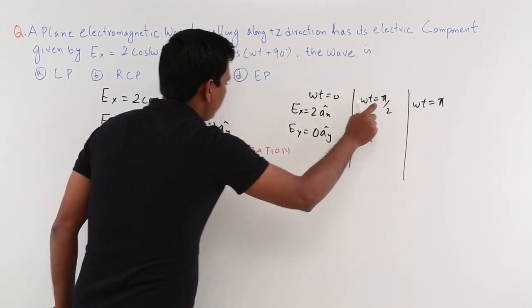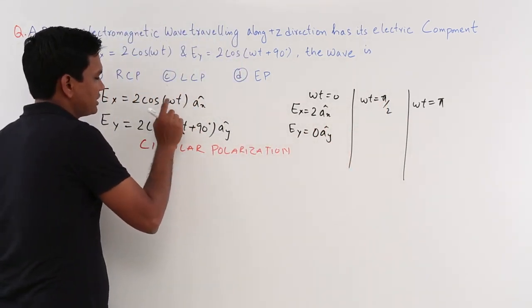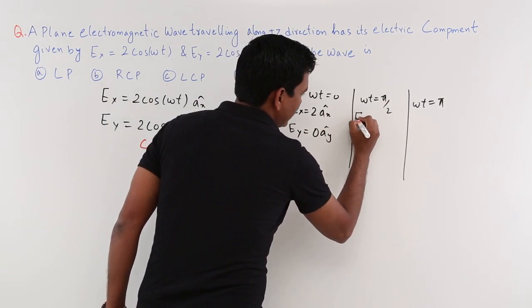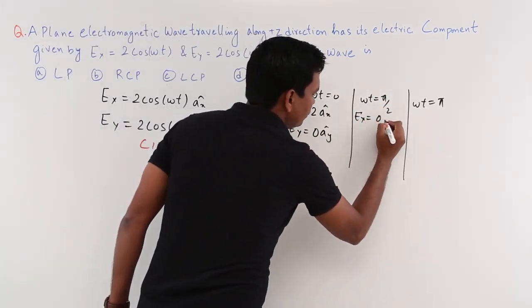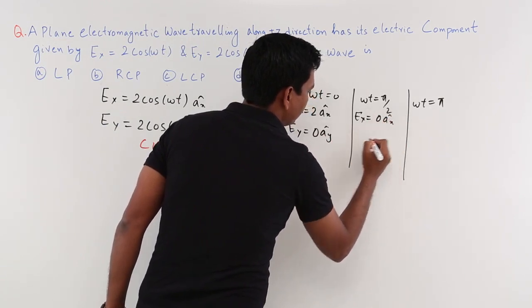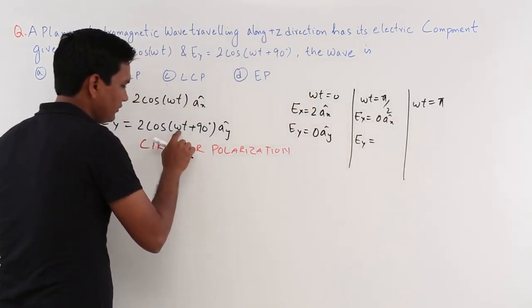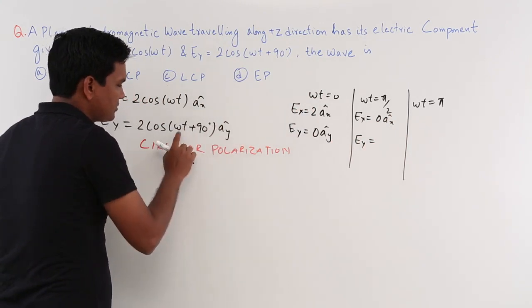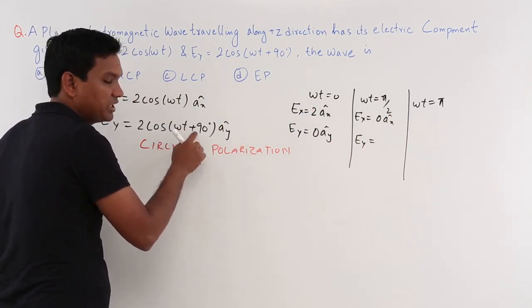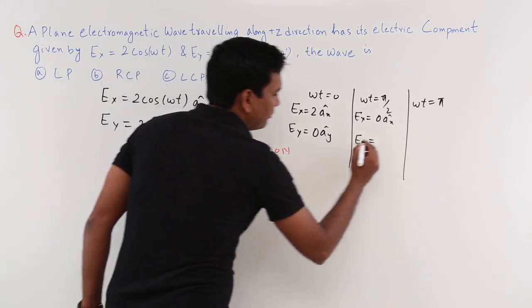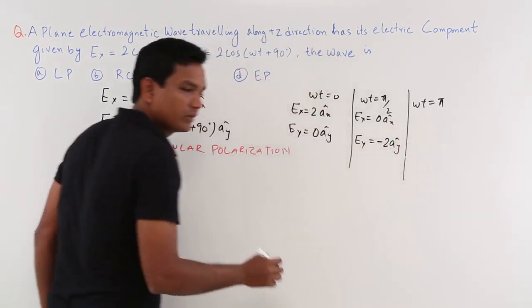At ωt = π/2 (90°): cos(90°) = 0, so Ex = 0. For Ey, 90° + 90° = 180°, and cos(180°) = -1, so Ey = -2ŷ.